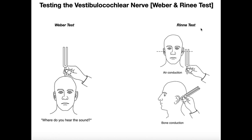For the Rinne test, you strike the tuning fork and place one prong right on the patient's mastoid process — that's a bony projection directly posterior to the ear. You ask the patient to tell you when they stop hearing it. As soon as they say they can't hear it, you quickly move the tuning fork next to their ear without touching them, and ask if they can still hear it. Either they hear it through the air or they don't. Based on those results, we can determine which ear is impaired and whether it's neurosensory or conductive loss.